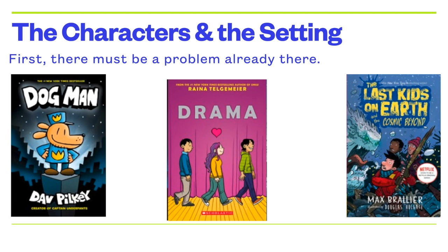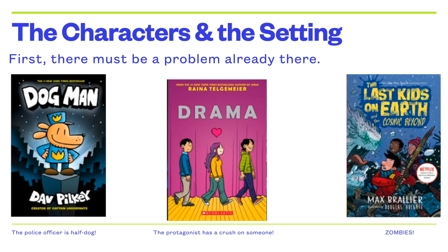And then the Dog Man series — the problem already happened before the book even started. There were two characters, a police officer and a dog, and they were both injured on the job. The doctor said, to save your lives, I'm going to sew you both together. It's ridiculous, and that's why it's hilarious. The problem in Dog Man is that the police officer is half dog. Whatever happens in the series, it's because Dog Man is distracted by his dog abilities — he tries to chase a criminal and gets distracted by some bones. Same thing with Drama: the protagonist has a crush. Last Kids on Earth: the problem is zombies. Simple and to the point.